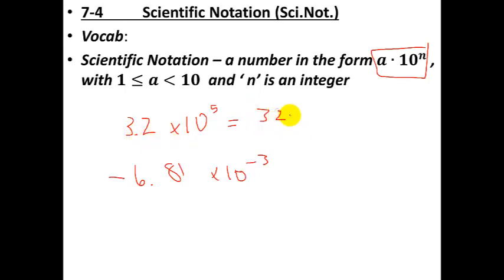So this is 3, 2, 0, 0, 0, 0. So 1, 2, 3, 4, 5 digits. The decimal was right here, 1, 2, 3, 4, 5. So this is the same as 320,000. So 3.2 times 100,000 is a shorthand way to write it, but you need to understand the exponent rules.